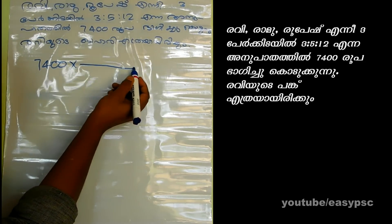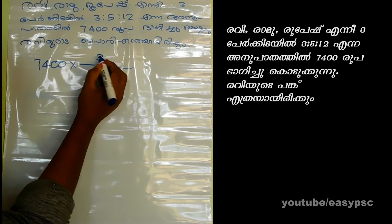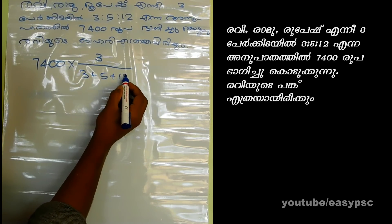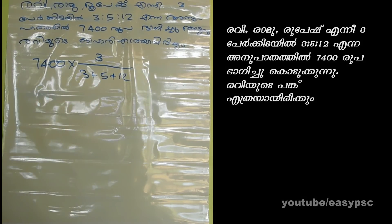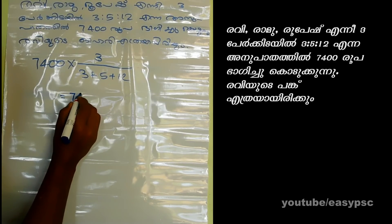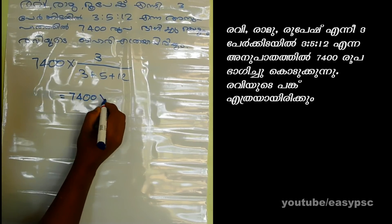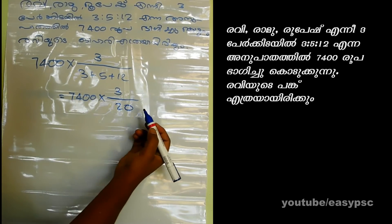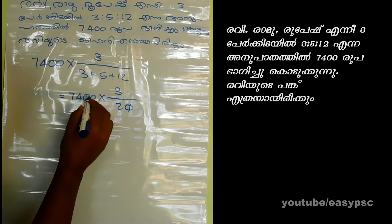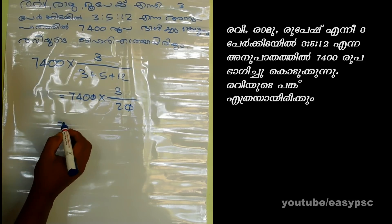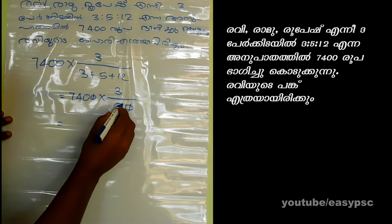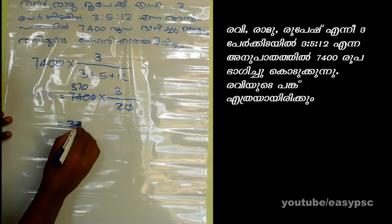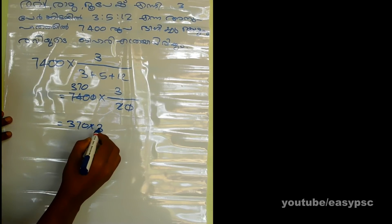Revi, Ram, Rubesh, Shenni, 3, and 5, divided by 3 plus 5 plus 10. 7.1.3 by 3.5.15. I will put 20. Let's put the two pieces in. 3753.